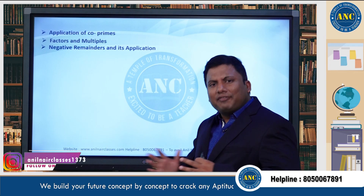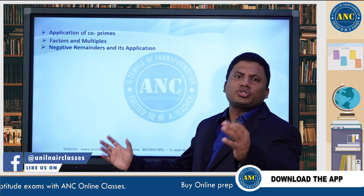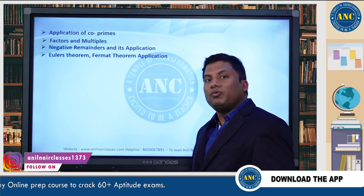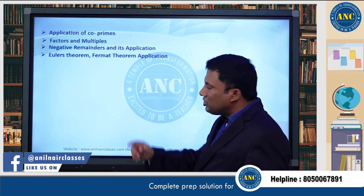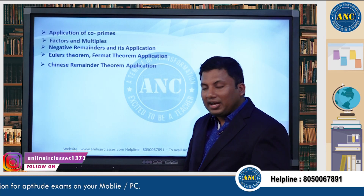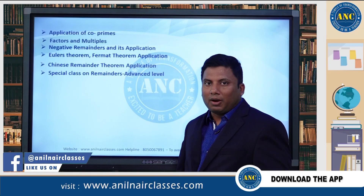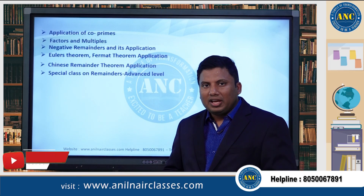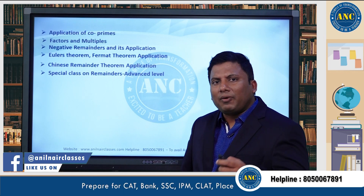Next comes factors and multiples — everything in detail as part of this free class. Then negative remainders: what is a negative remainder, and we will solve close to 15–20 problems only on negative remainders. Next — what happens if you cannot determine which power of the numerator when divided by the denominator is not +1 or −1? That's where Euler's theorem comes in, used when the denominator is a composite number. Fermat's theorem is used when the denominator is a prime number. What if Euler's theorem does not work? Then comes the Chinese Remainder Theorem and how to write a number as a product of two co-primes.